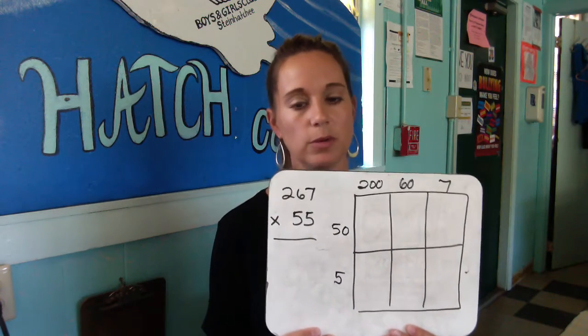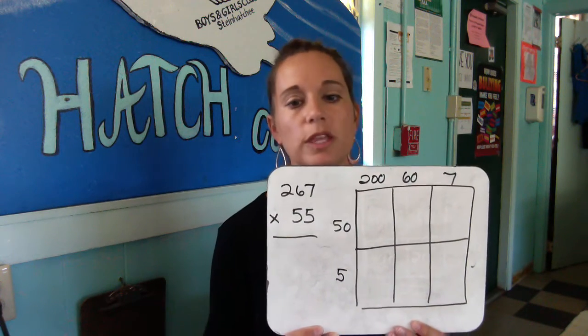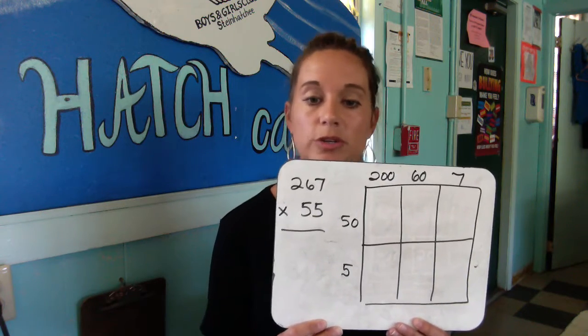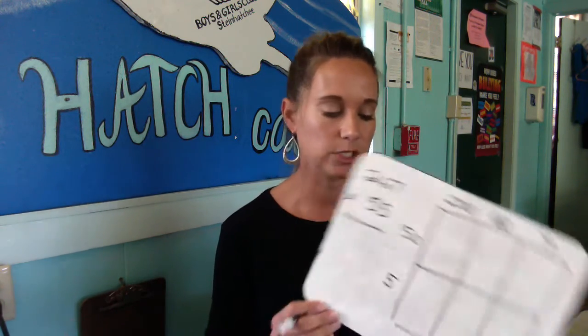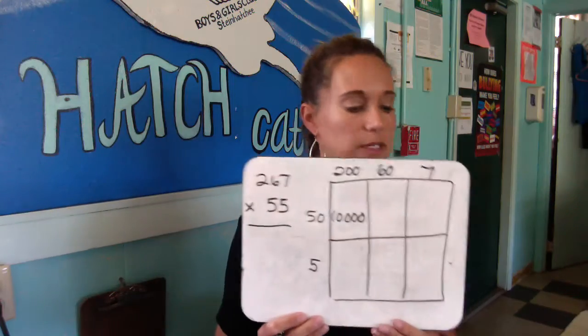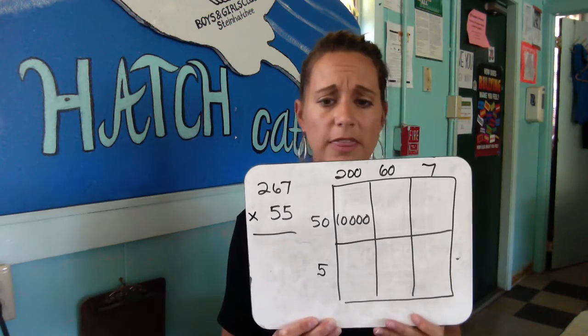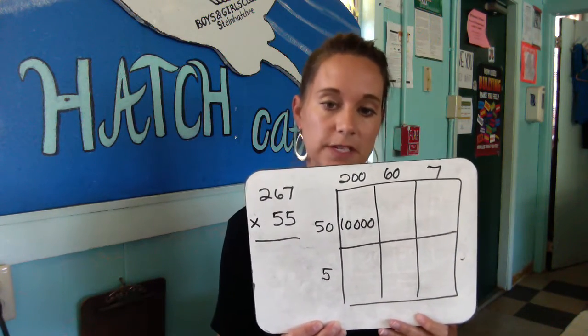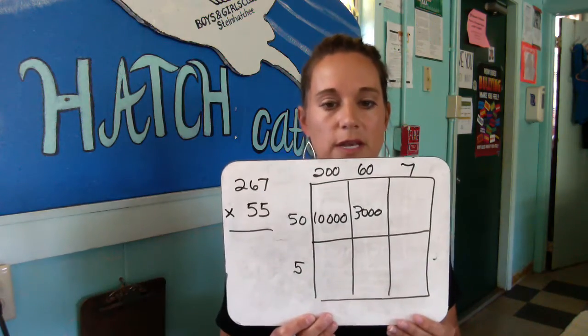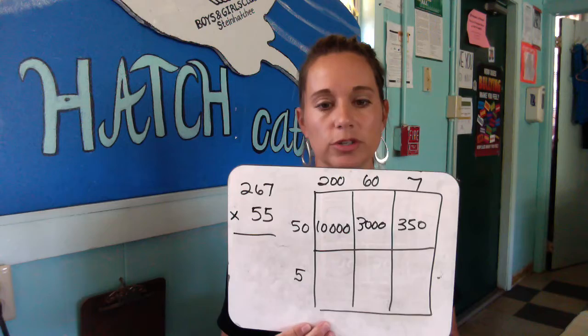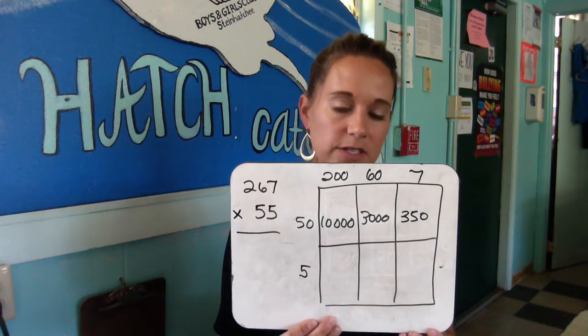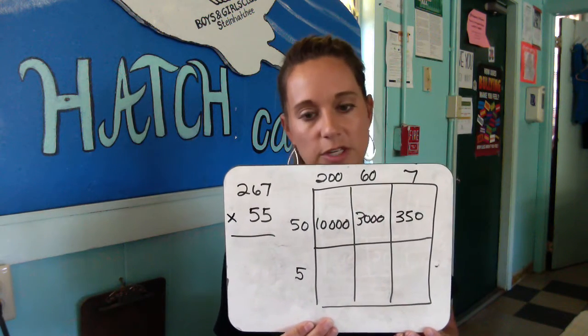With 200 times 50: the shortcut is 5 times 2 equals 10, and then I see three zeros, so that gives us 10,000. Then 60 times 50: 6 times 5 is 30, and then add those two extra zeros — that's 3,000. Then 7 times 50: 7 times 5 is 35, and then add that extra zero for the 50, giving you 350.